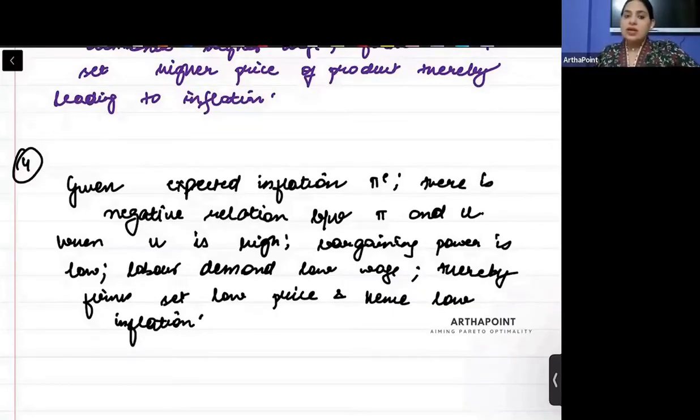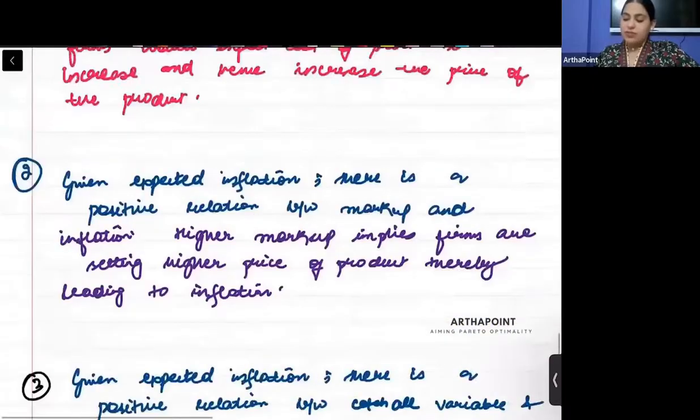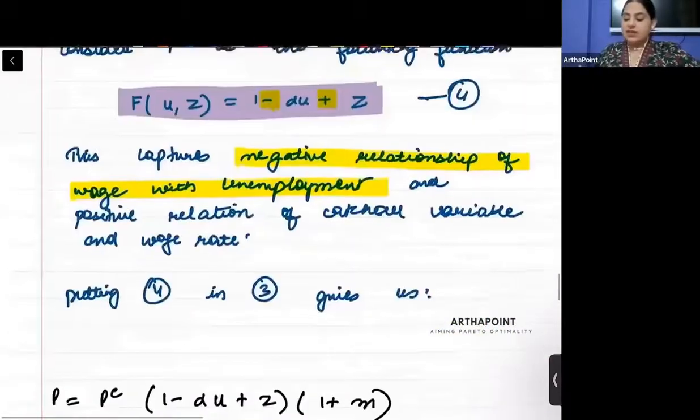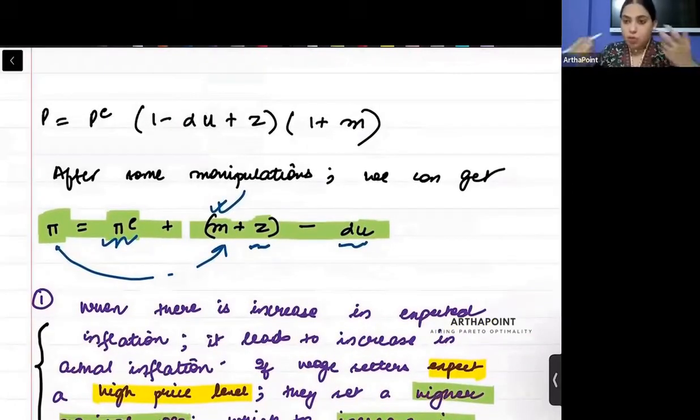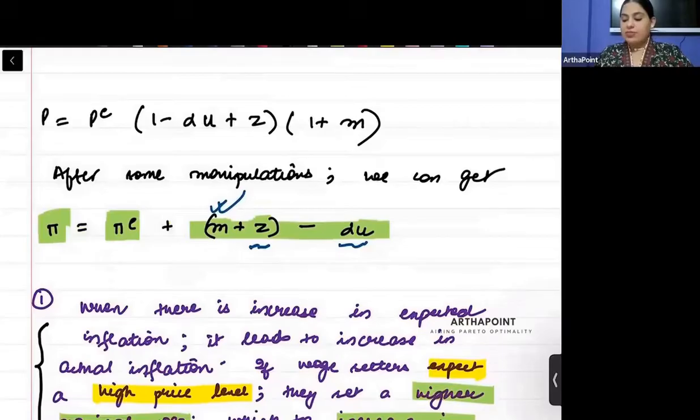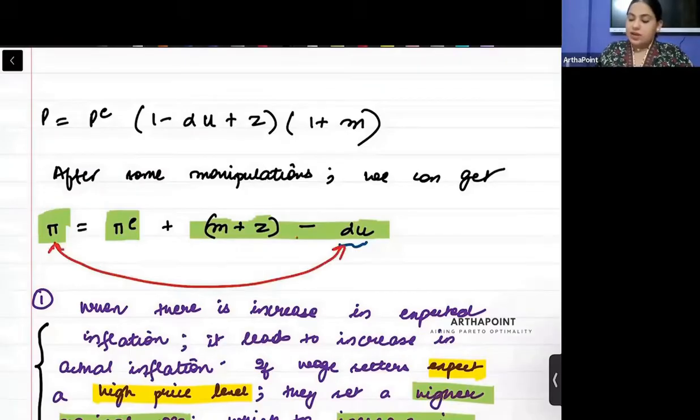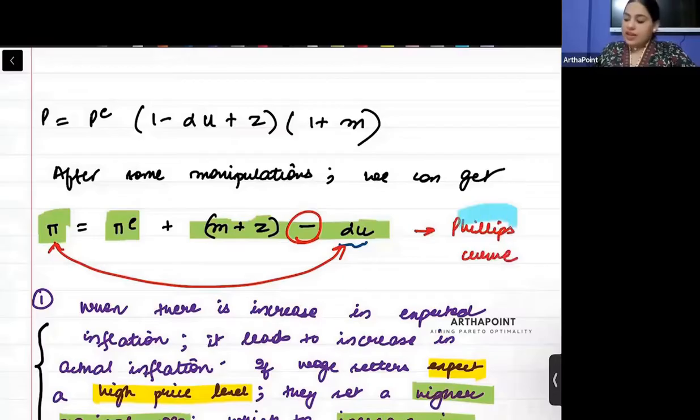Now we have understood that inflation and unemployment, why they are negatively related to each other. That is what the last point says. We just proved that inflation and unemployment, they are negatively related to each other. Right? But this itself, this is called the Phillips curve. So this negative relationship between inflation and unemployment, that is called the Phillips curve.